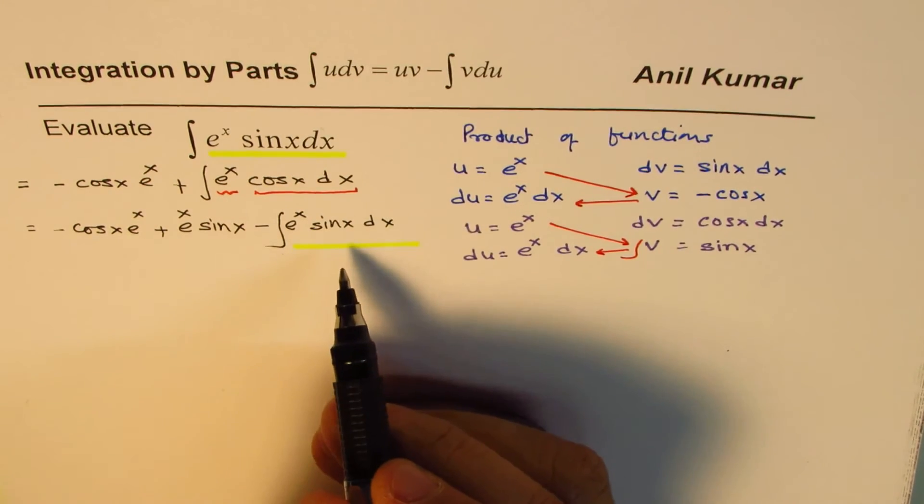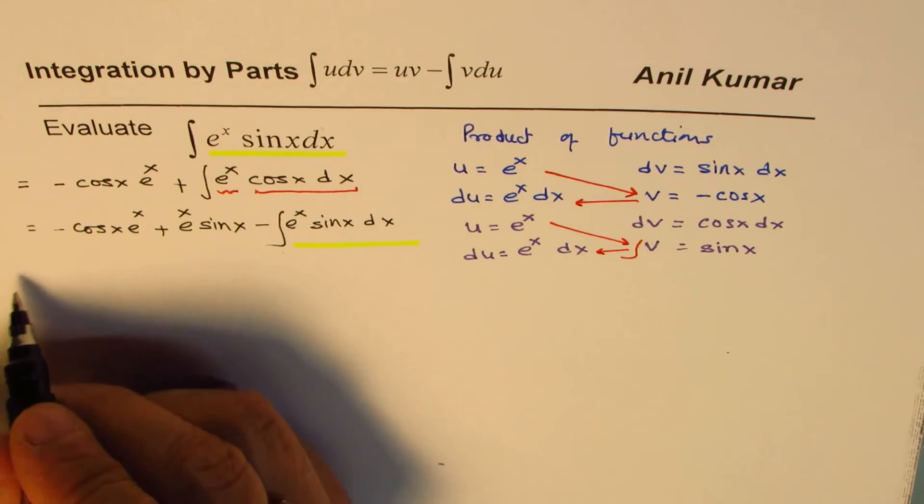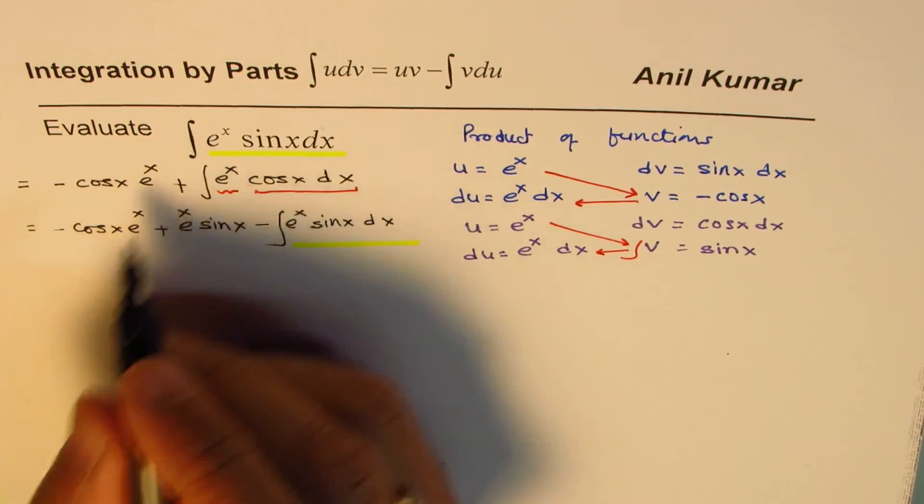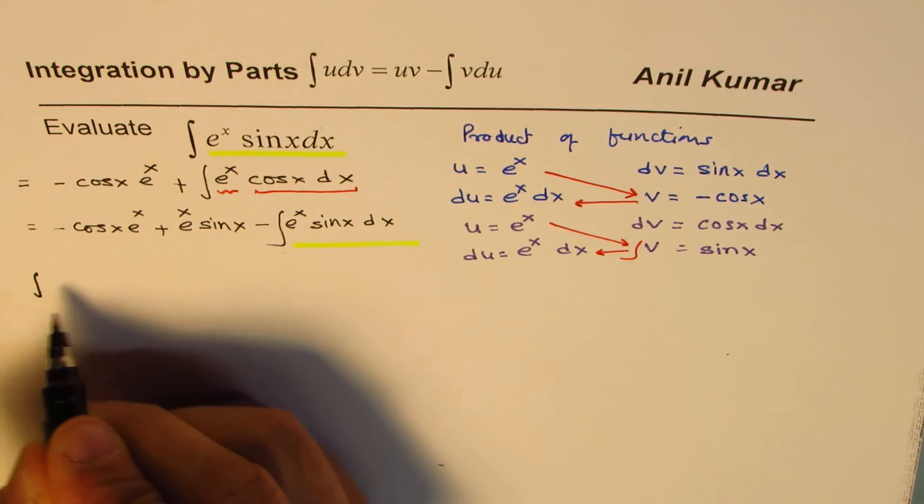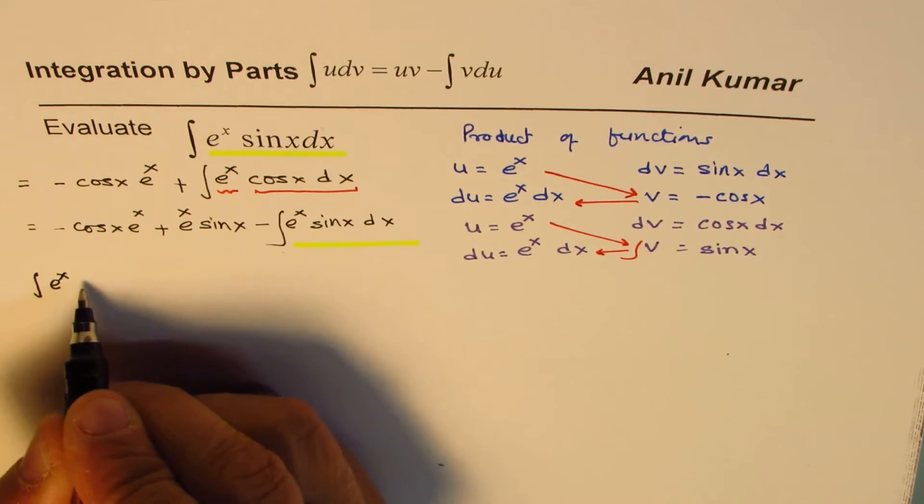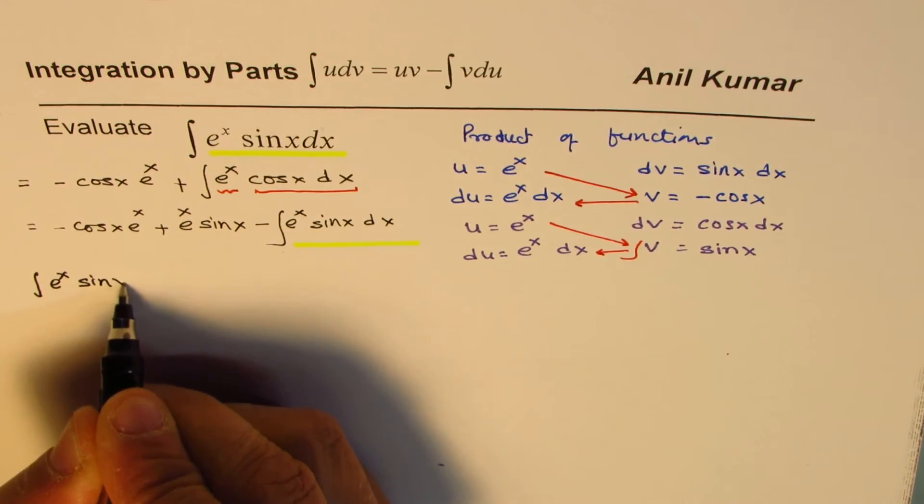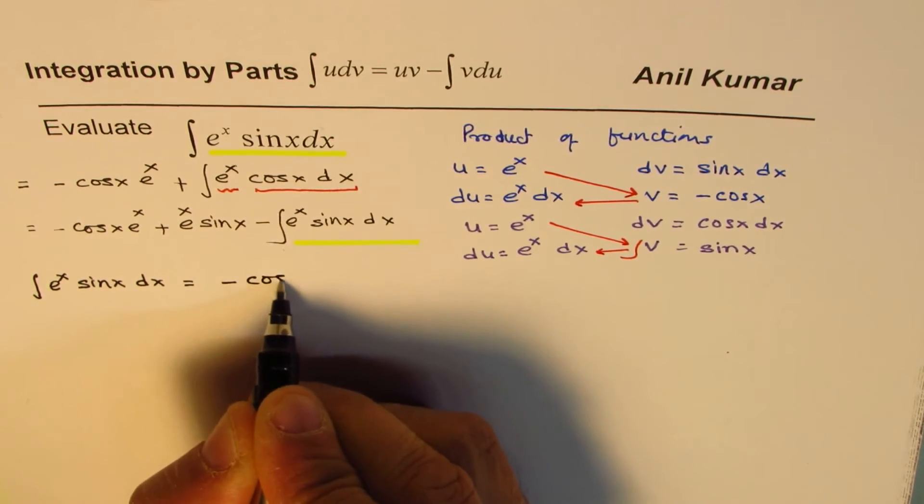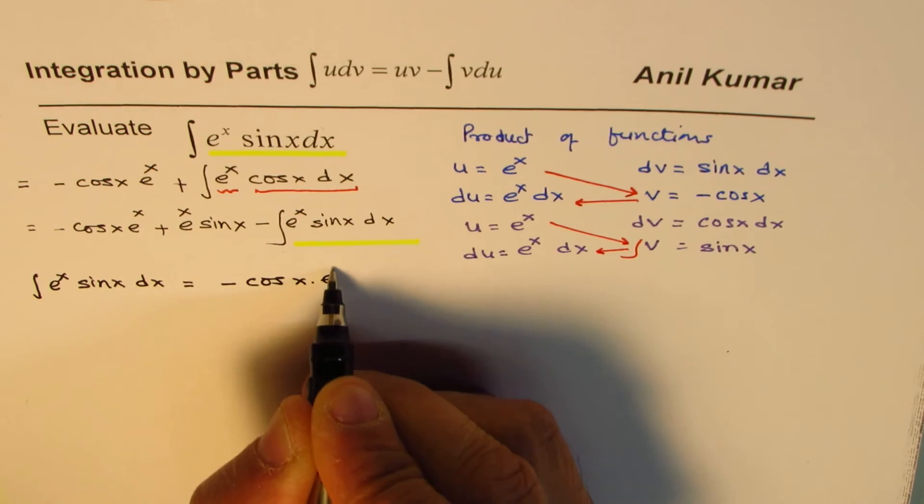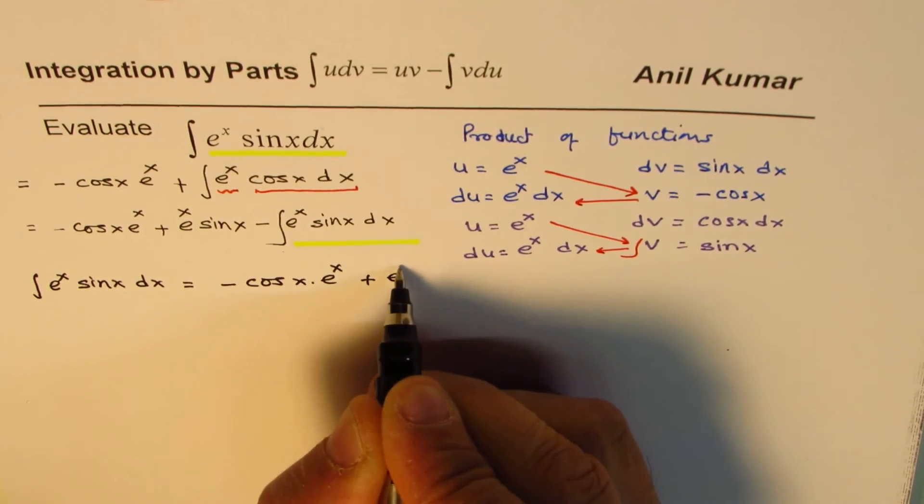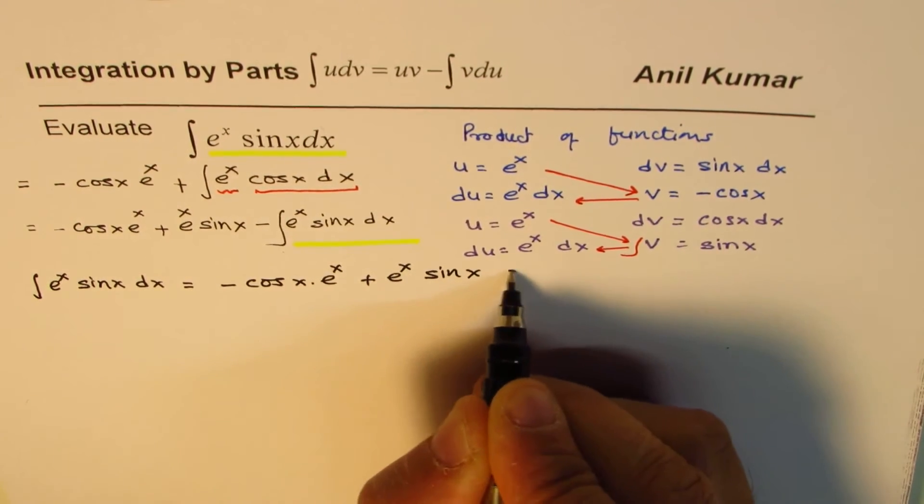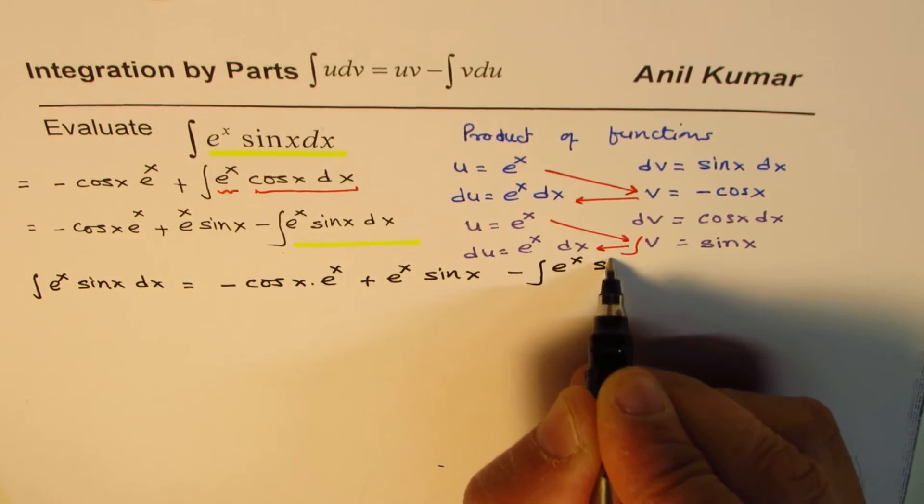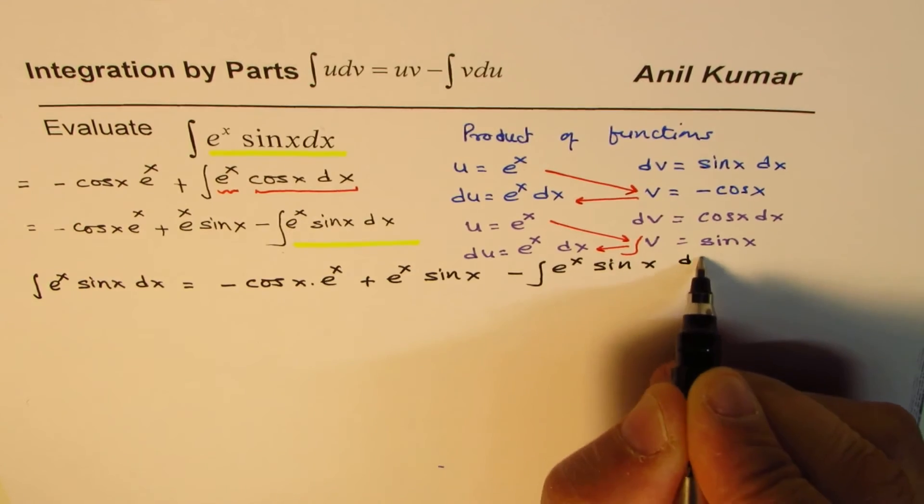So what we can do now here is, we'll rewrite the equation. So we have integral of e to the power of x sin x dx equals minus cos x e to the power of x, plus e to the power of x sin x, minus integral of e to the power of x sin x dx.